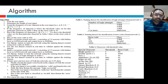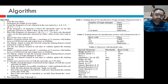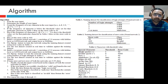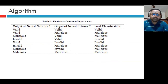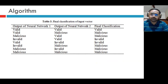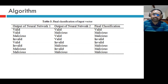If the training error and test error of both networks are 0.0%, then the input vector is classified based on the combined outputs of both neural networks as shown in Table 3. This dataset is the combination of the outputs of the previous two neural networks, used for final classification. If the output of both neural networks is valid, the final classification is valid. If one of them is malicious, the result is malicious. If one is invalid, the result is invalid.